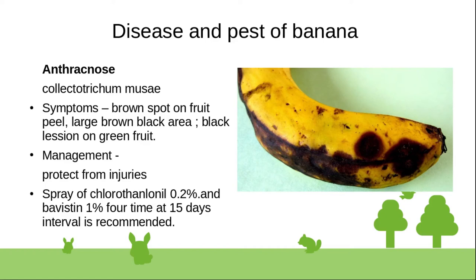Symptoms of anthracnose include brown spots on fruit and peel, large brown-black areas, and black lesions on green fruit.